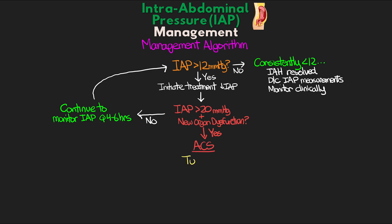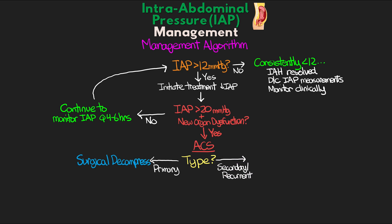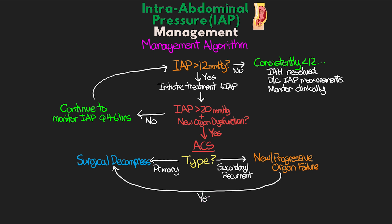At this point, we need to assess whether the patient has primary ACS, secondary ACS, or recurrent ACS. If it is primary, then the next step is surgical decompression. If it's secondary or recurrent ACS, there's a chance that the organ dysfunction could already be present and not related to our current intra-abdominal pressure measurements. Therefore, we need to determine if there is new or progressive organ failure. If so, then surgical decompression is going to be warranted. In cases of recurrent abdominal compartment syndrome, if a previous decompression was performed, a revision may be necessary.